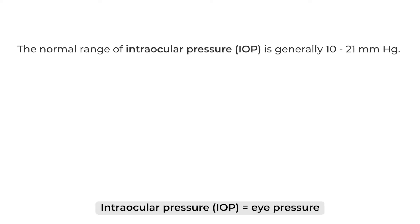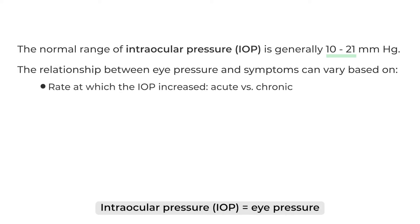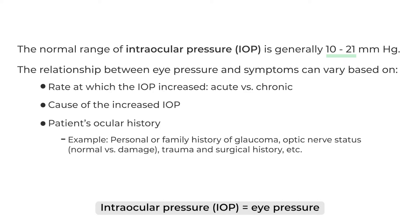The normal range of intraocular pressure, or IOP, is generally 10 to 21. The relationship between eye pressure and symptoms can vary based on the rate at which the IOP increased — whether it was a rapid increase or slow over time — the cause of the increased IOP, as well as the patient's ocular history, like whether they have a personal or family history of glaucoma or already have optic nerve damage.